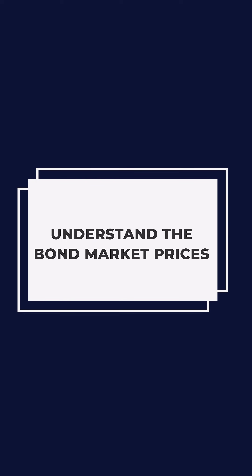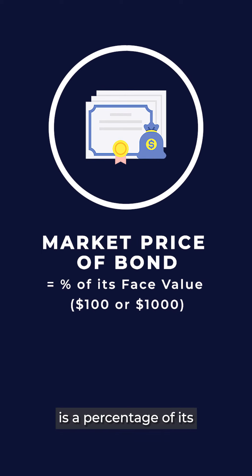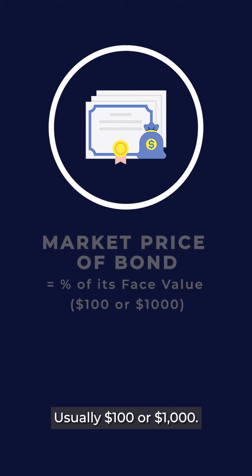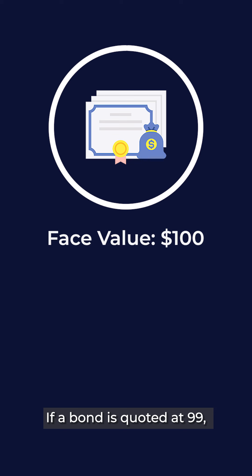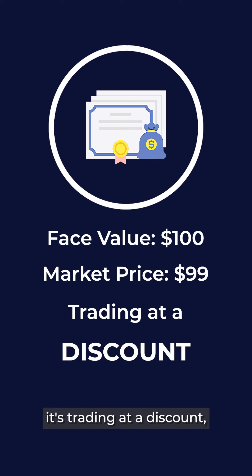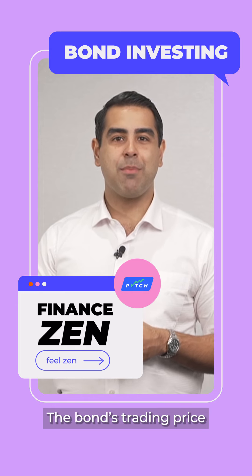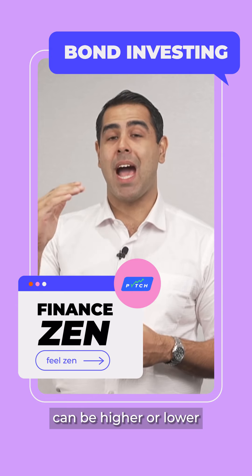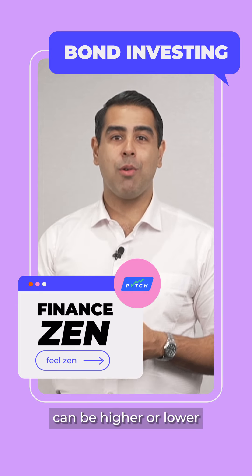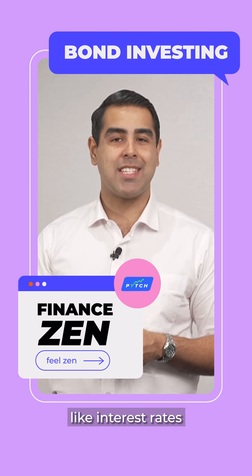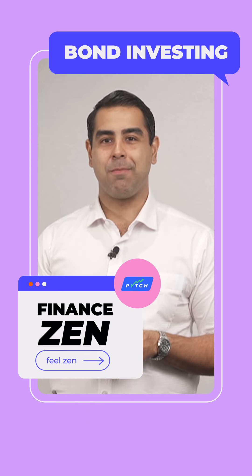Understand the bond market prices. The market price of a bond is a percentage of its face value, usually $100 or $1,000. If a bond is quoted at $99, it's trading at a discount, meaning investors can buy it for less than its face value. The bond's trading price in the secondary market can be higher or lower depending on factors like interest rates and credit rating.